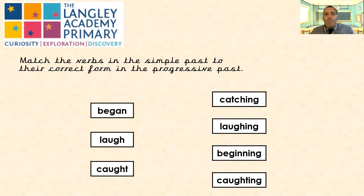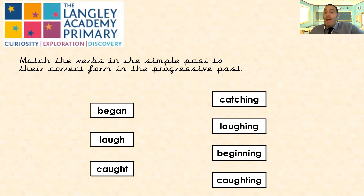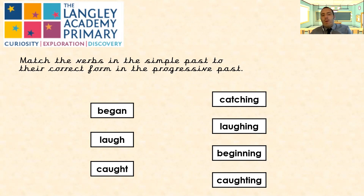Now we're going to match the verbs in the simple past to their correct form in the past progressive. We've got 'began' — I began to do something. 'Laugh' — I had to laugh. 'Caught' — I caught a fish. We're going to put these into the past progressive tense. Have a go and see how you get on — pause the video now.